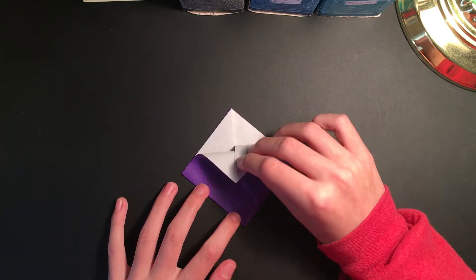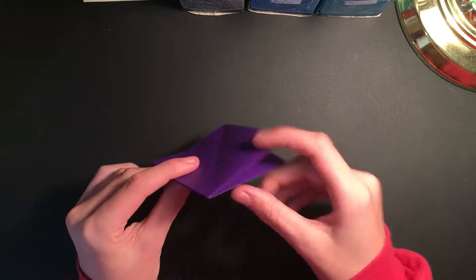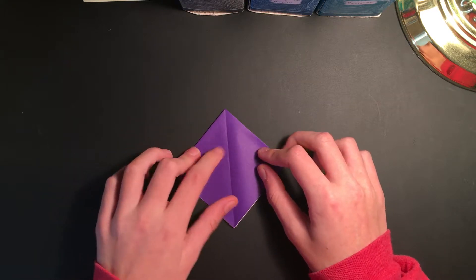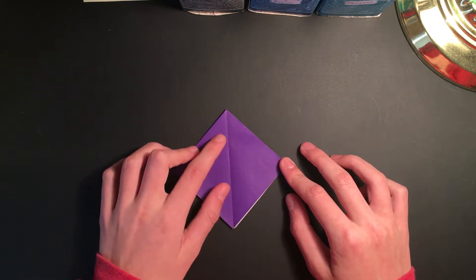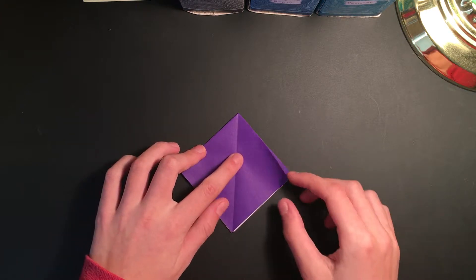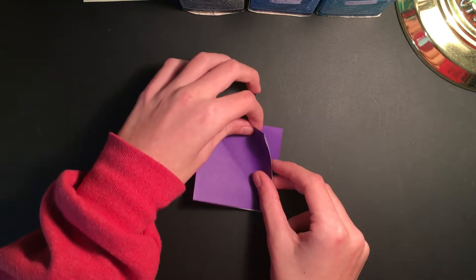Now we've got some flaps up here and we also have a closed side. We want the flaps facing towards us for this next part. With the flaps facing towards us, we are going to take one of these flaps and do a kite base.